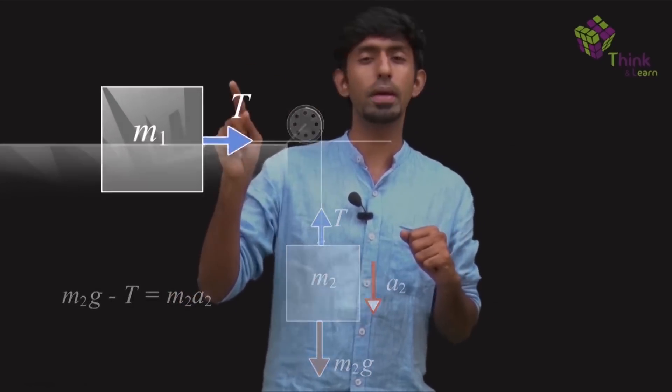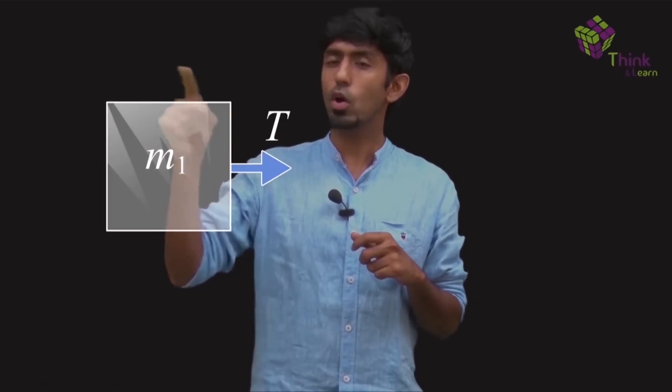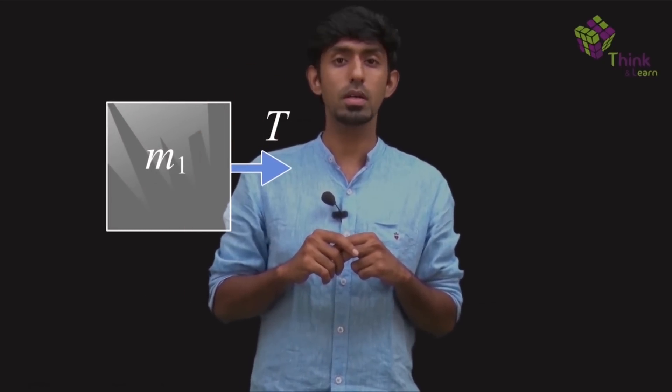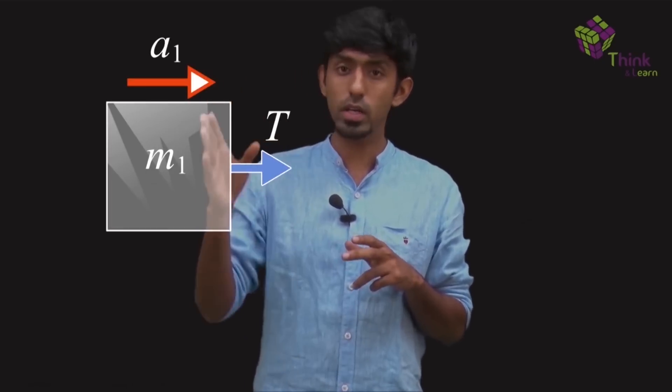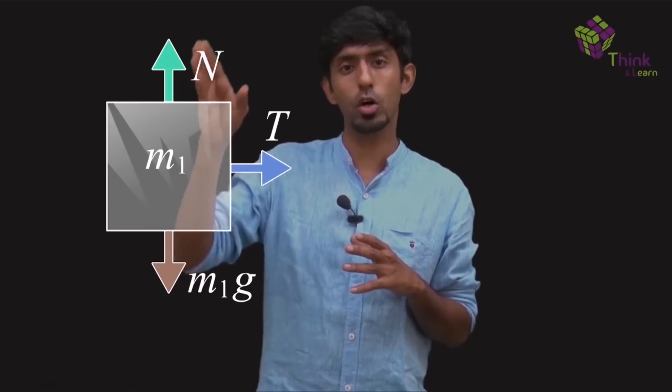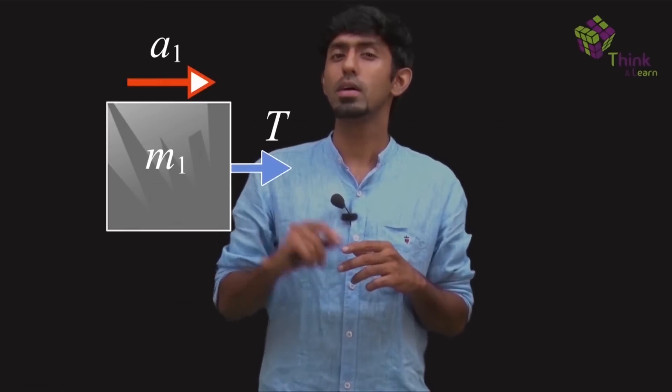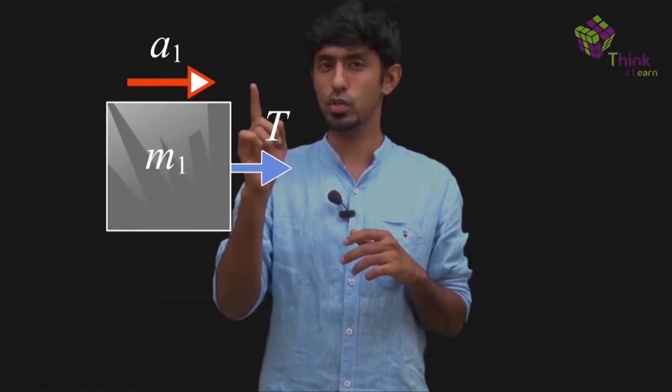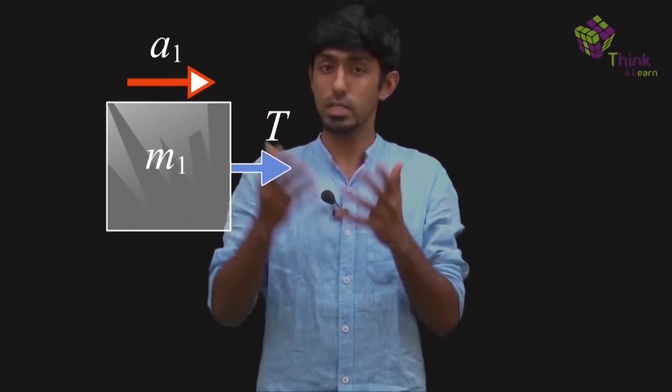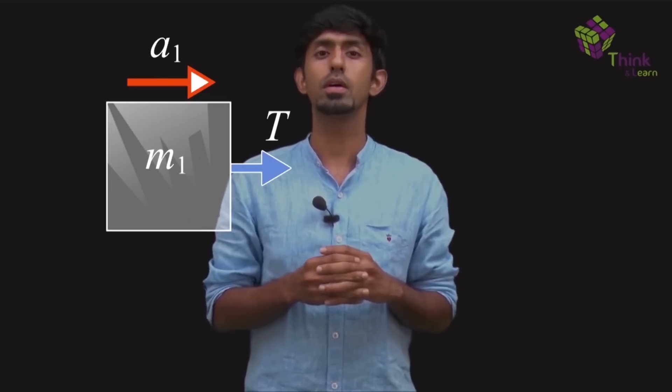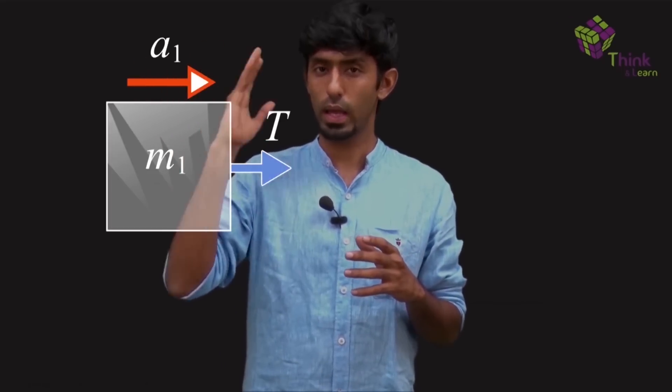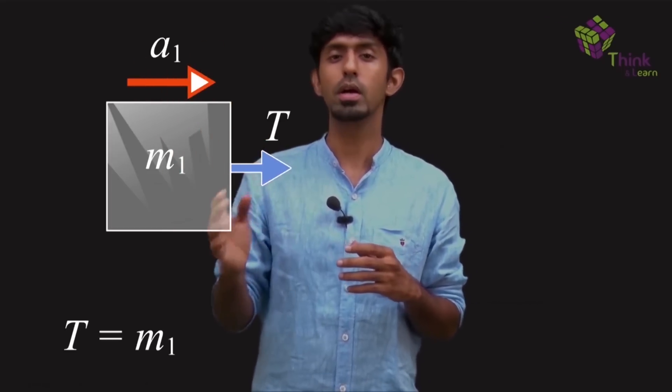The same equation I have to write for m1 now. For m1, along the horizontal, there is an acceleration. Along the vertical, it will have an m1g and a normal direction which are both going to cancel. So we do not care about the vertical right now. It is very obvious that it is 0 in that. So along the horizontal, if you write, there is only one force along the horizontal, which is T. So that is the net force. That must be equal to m1 into a1. So T equals m1 into a1.